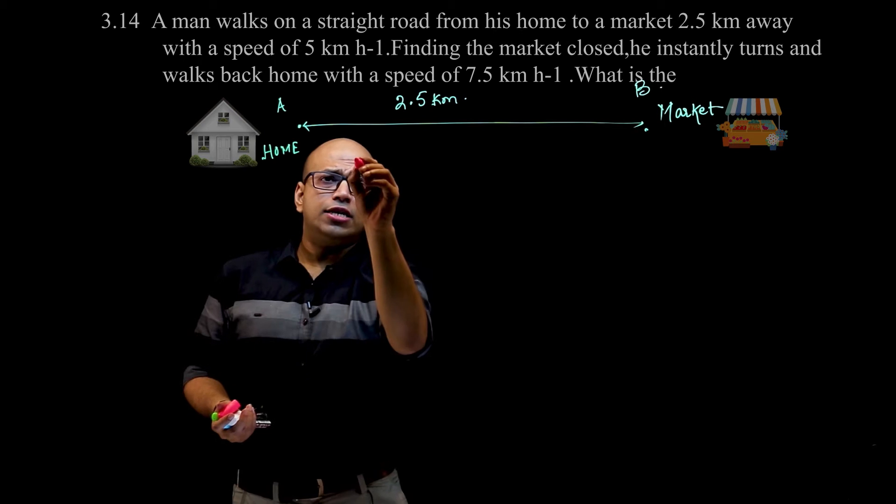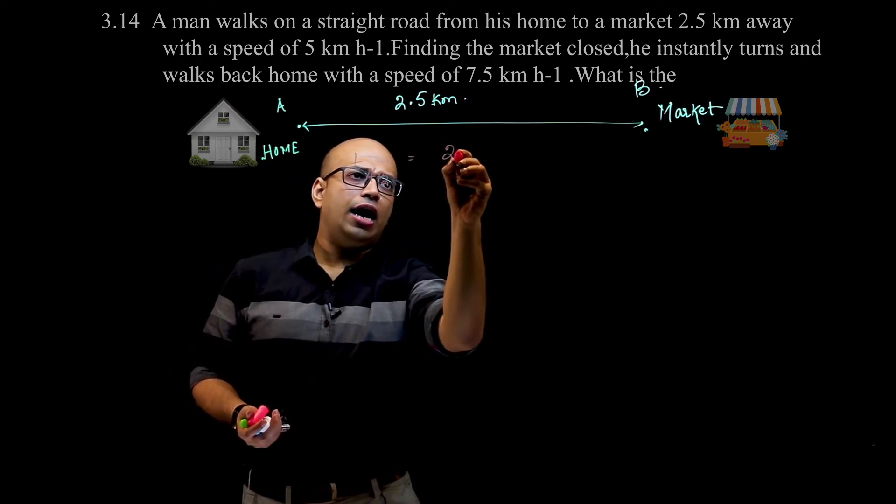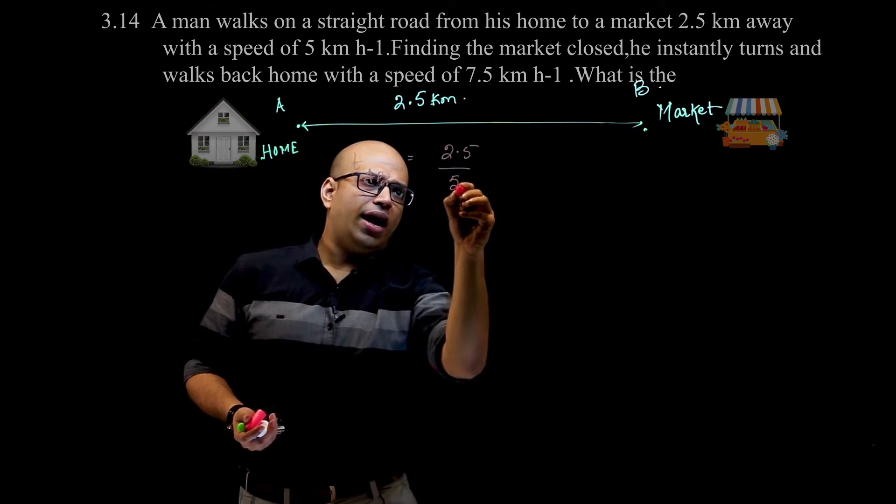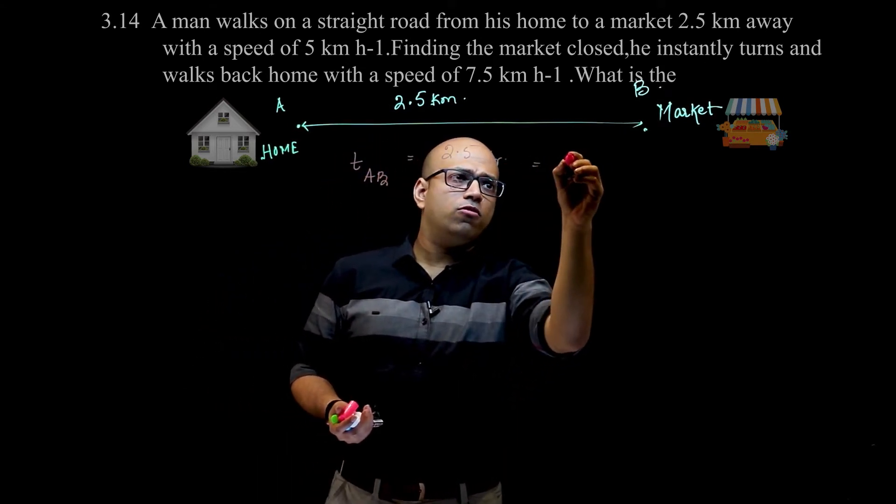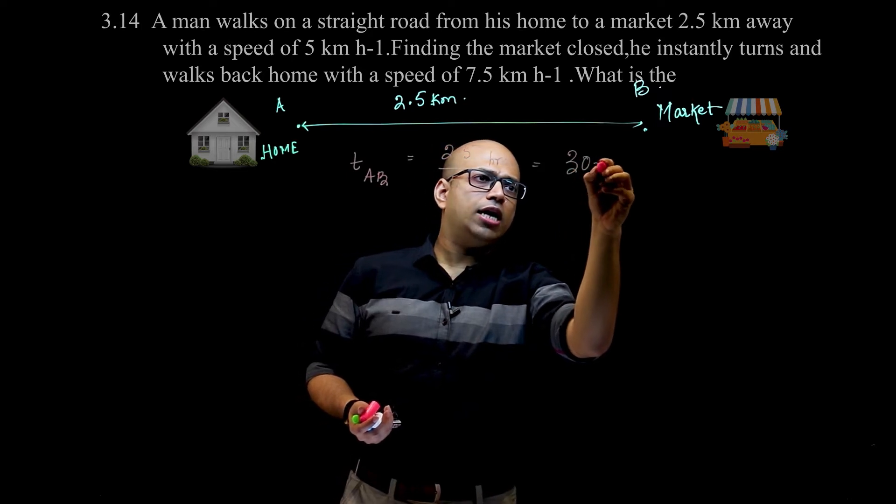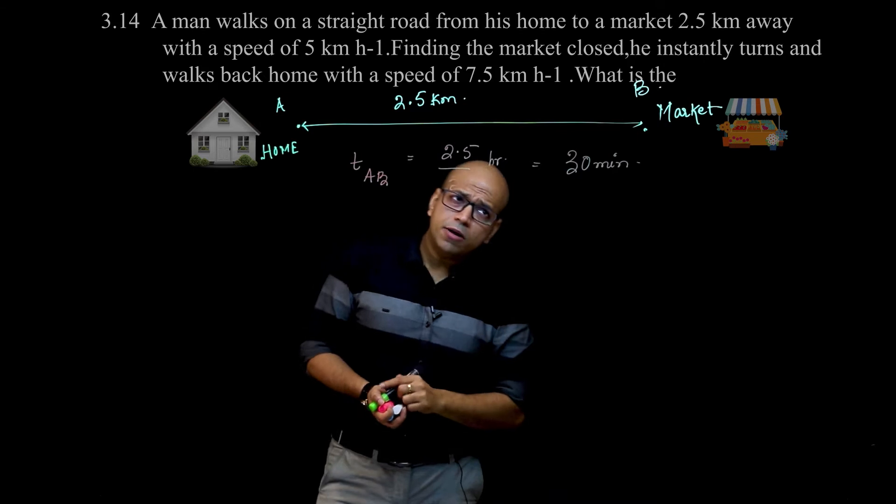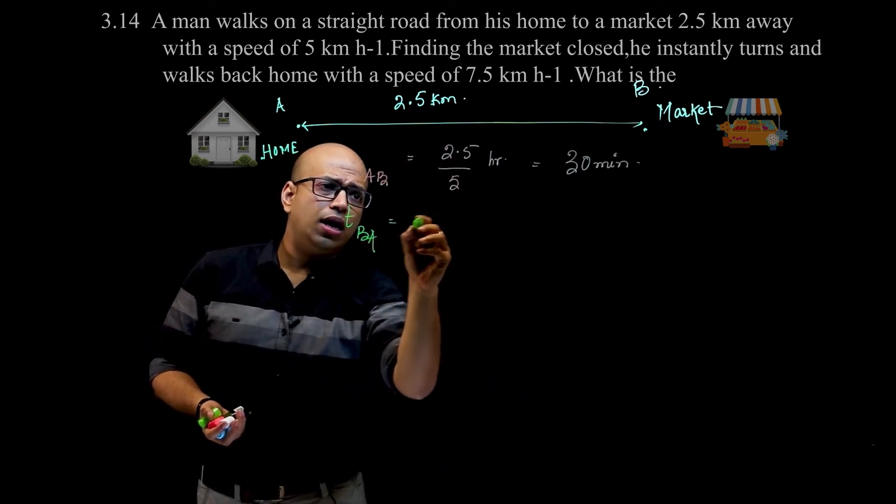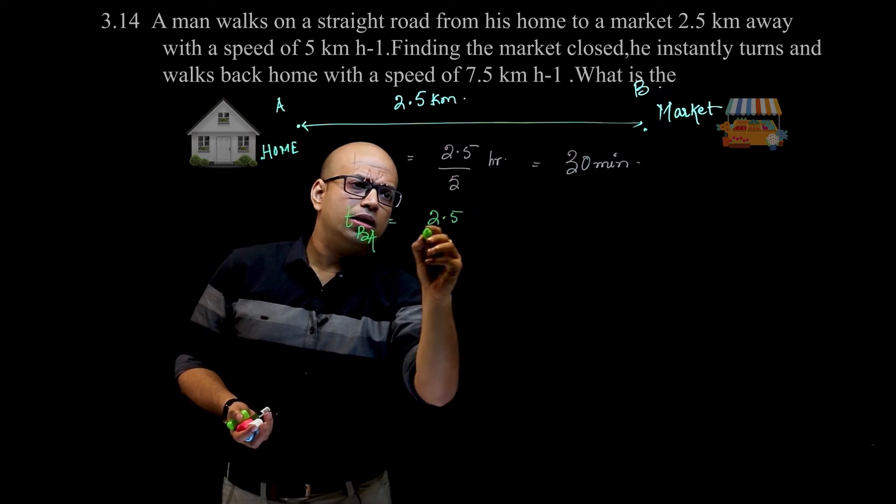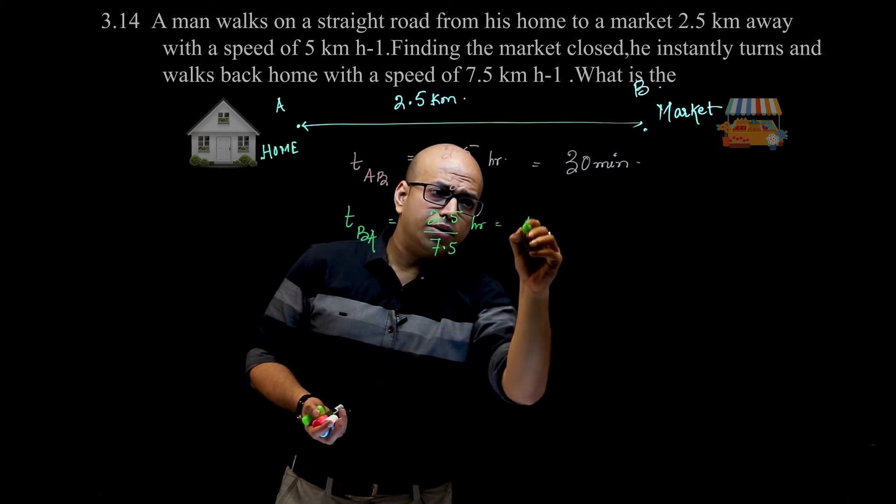Time taken from A to B: 2.5 kilometers divided by 5 kilometers per hour, so half an hour - that's 30 minutes. And for the return, B to A: 2.5 kilometers divided by 7.5 kilometers per hour equals one-third hour, which is 20 minutes.